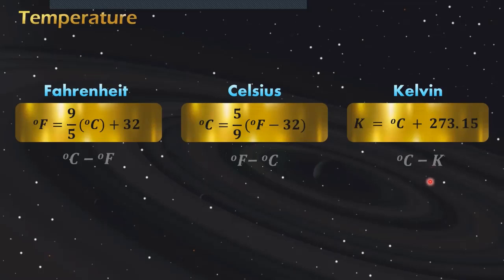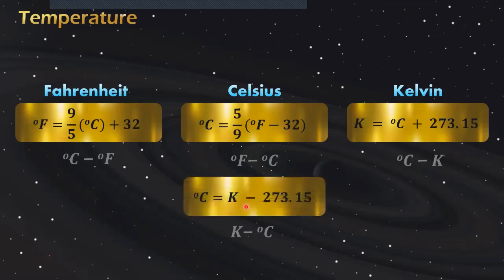We could also derive this formula to convert from Kelvin to degrees Celsius. Just transpose 273.15 to the left side and change the sign. The derivation will be degrees Celsius equals Kelvin minus 273.15.